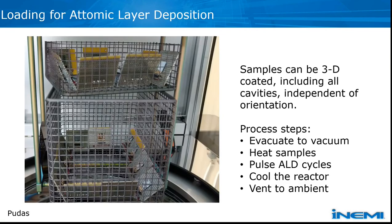I'll hand over to Marco from PicoSun. One coating method in this project has been atomic layer deposition, which is a gas phase coating method in vacuum where samples can be 3D coated including all cavities independent of location and orientation. Samples are loaded into a basket, lowered, and evacuated to vacuum. Samples are heated up, then pulses of ALD deposition cycles are run on the samples. Then it's cooled down and vented to ambient.